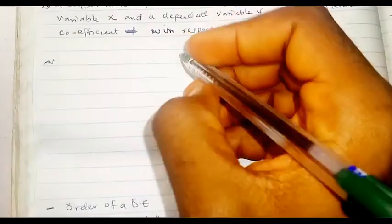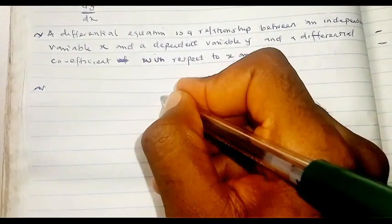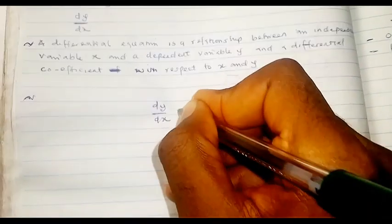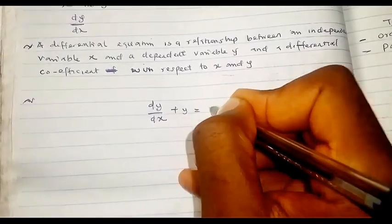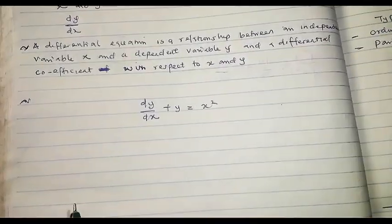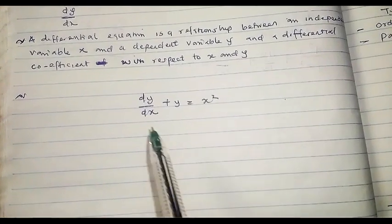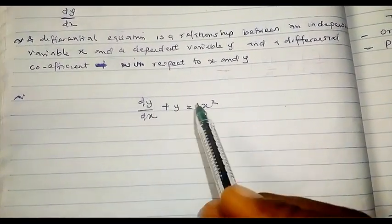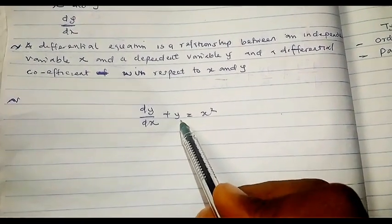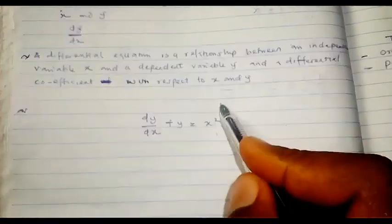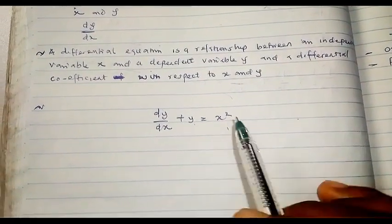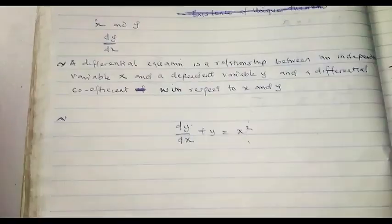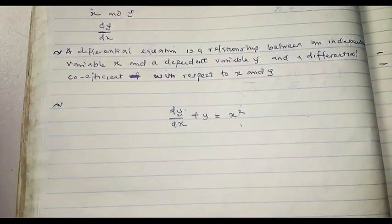For example, dy/dx + y = x² is a differential equation, because dy/dx is the differential coefficient of y with respect to x, and we also have variables y and x. So we call this a differential equation because it shows the relationship that exists between two different variables and their differential coefficient.